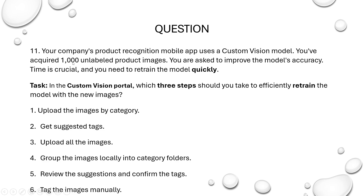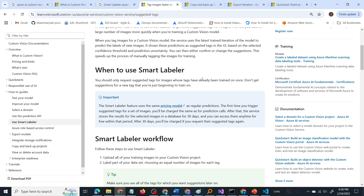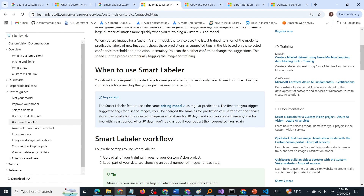These are new images, but they are of the same product — not a new category. We have to retrain the model with these new images. Thus we can use the smart labeler to label our images, because our model has already been trained with this kind of images. So smart labeler is a very good option here.